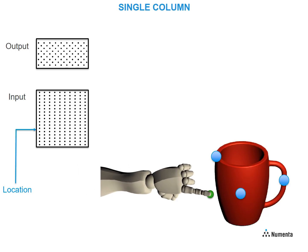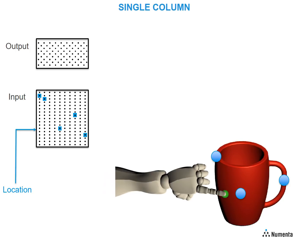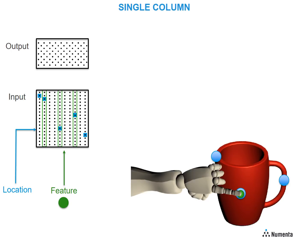As the finger moves towards the first point, a location signal is generated, representing where it's going to touch on the cup. The location signal depolarizes the set of cells whose distal dendritic segments match this location. This represents a prediction of the feature that will be sensed. When the finger touches the first spot, the sensory input activates a set of mini-columns in the input layer. Cells in these mini-columns that were also predicted by the location signal become active. These cells are shown in pink. This propagates to the output layer.